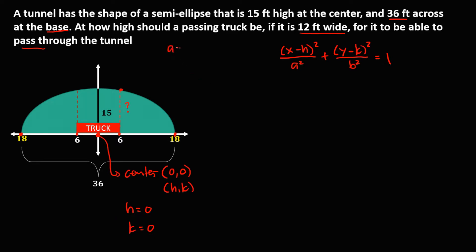To solve for A: since A is from the center to one of the bases, that's 18, so A is equal to 18. To solve for B: from the center to the height of the tunnel, that's 15, so B is equal to 15. Note that in an ellipse, A is greater than B. For X and Y, since we're looking for the height of the track, we use this point — X is 6 and Y is the unknown.